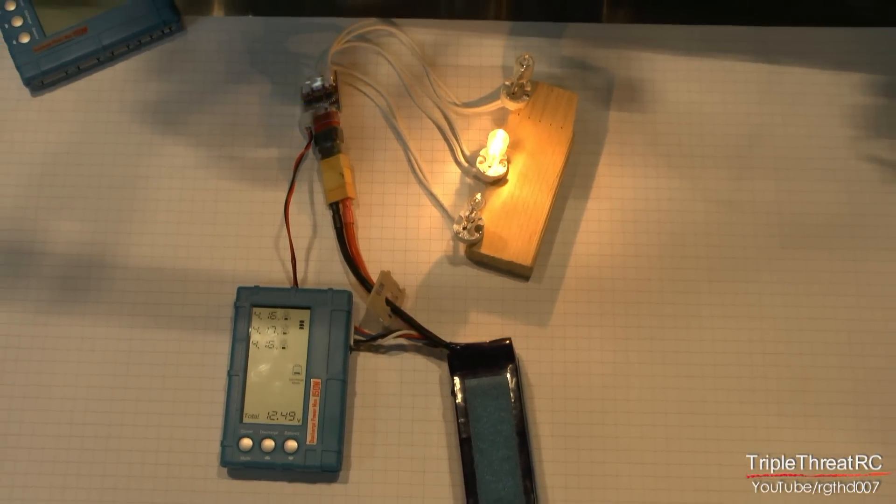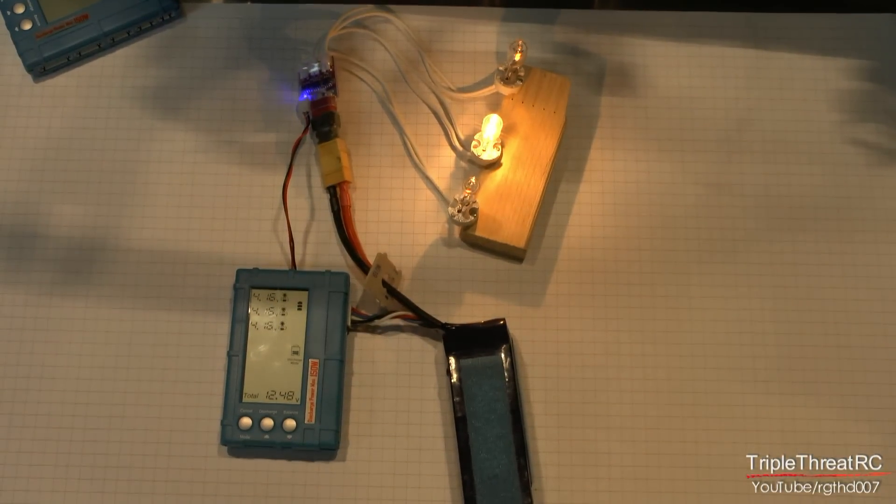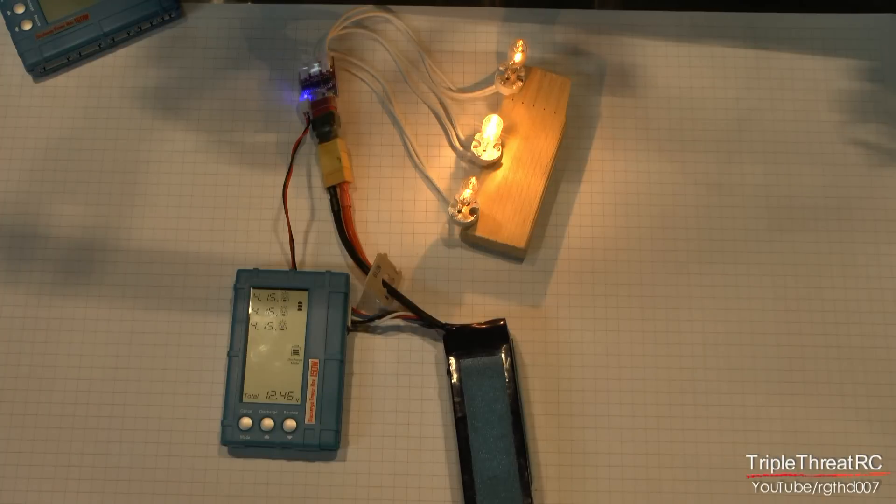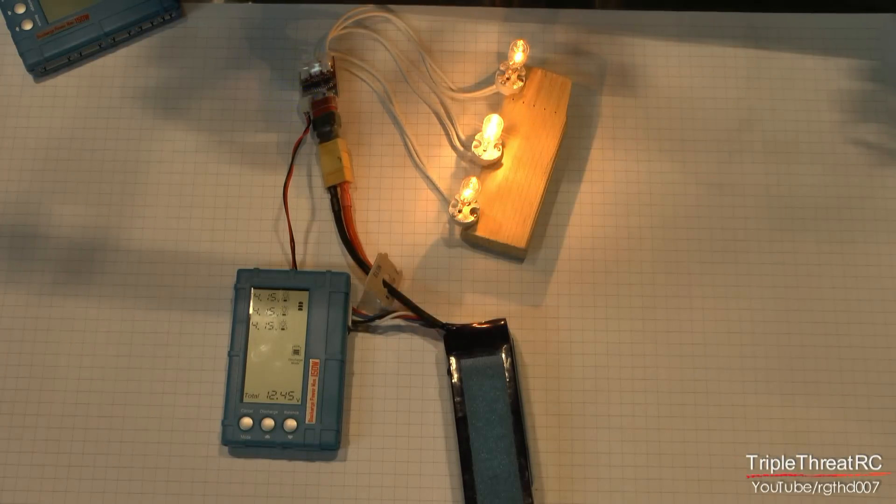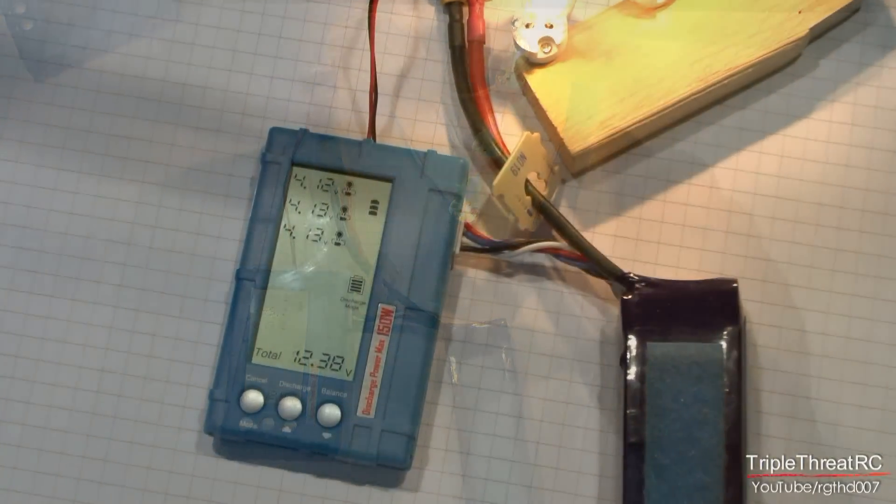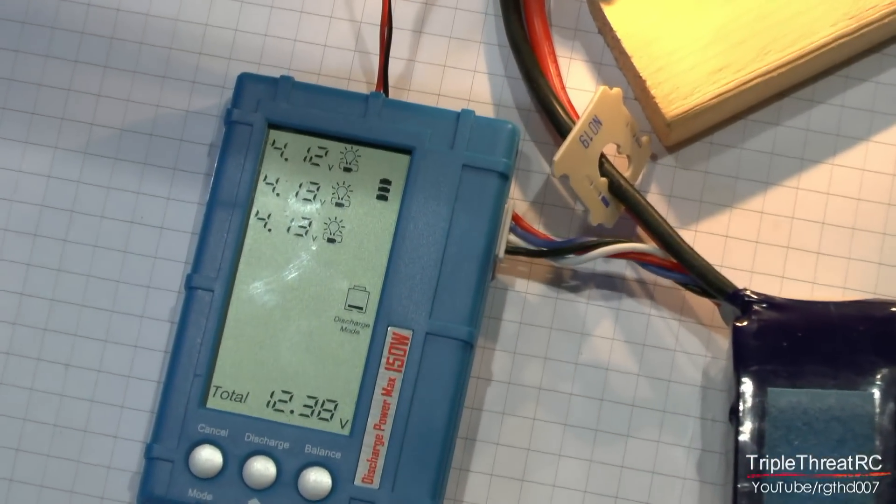You'll notice throughout the discharge cycle that the circuitry modulates the power driven to the light bulbs, so that you're going to see them in various states of brightness as it goes through the discharge cycle.